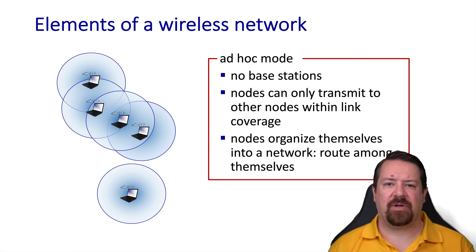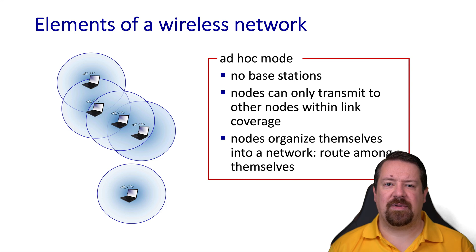In contrast, we have ad hoc wireless networks, where the wireless hosts communicate with one another directly. They have to organize themselves into a network and can only communicate within the range of their radios — there's no base station to relay transmissions. However, being able to create such a network is certainly advantageous in environments where infrastructure doesn't exist, has been damaged, or is otherwise unavailable.